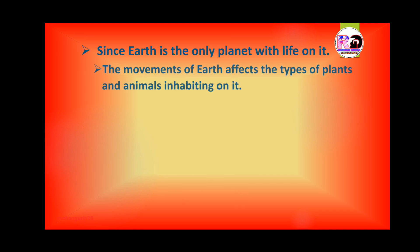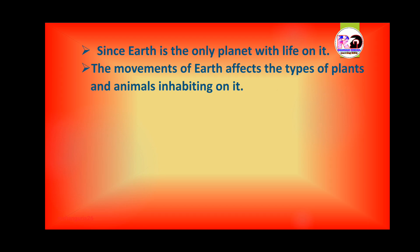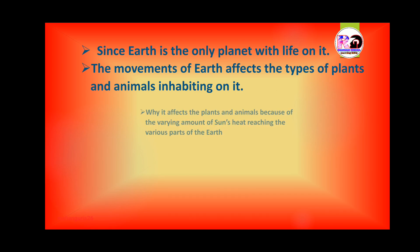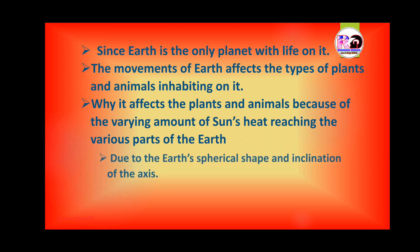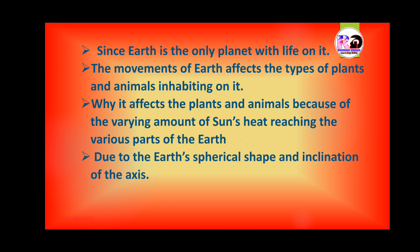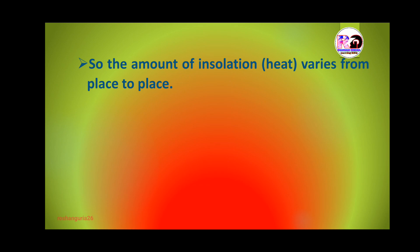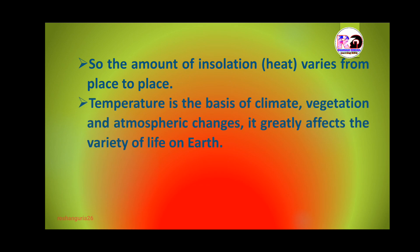Since earth is the only planet with life on it, the movement of earth affects the types of plants and animals inhabiting it. This is because of the varying amount of the sun's heat reaching the various parts of the earth. There are two reasons for this variation: the earth's spherical shape and inclination of the axis. The amount of insolation, or heat, varies from place to place, and temperature is the basis of climate, vegetation, and atmospheric changes, greatly affecting the variety of life on earth.